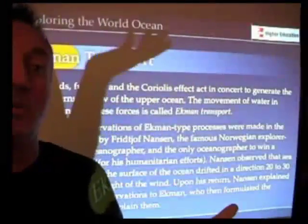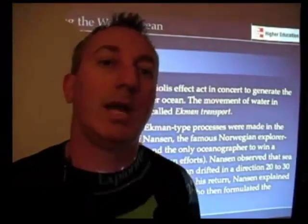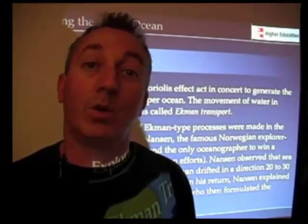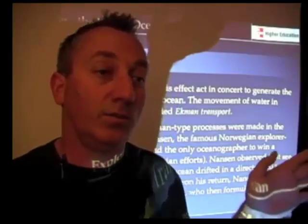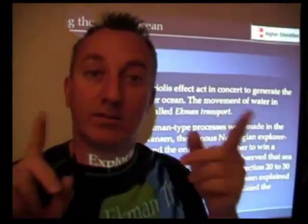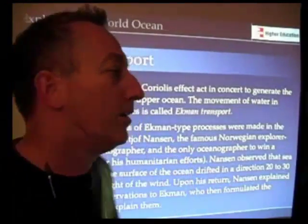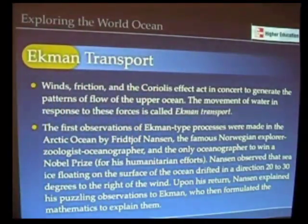So he came home and he told this to Wilfred Ekman, who happened to be a mathematician. And Ekman was aware of the Coriolis effect, so deflection to the right. He should start thinking about some things there. And Ekman put it all together into a mathematical formulation for which he is now famous.